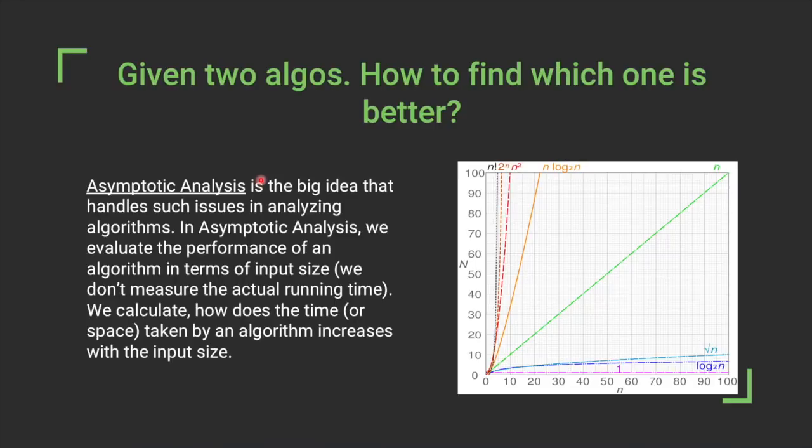Asymptotic analysis is the big idea that handles such issues in analyzing algorithms. In asymptotic analysis, we evaluate the performance of an algorithm in terms of input size. We don't measure the actual running time. We calculate how the time or space taken by an algorithm increases with input size.